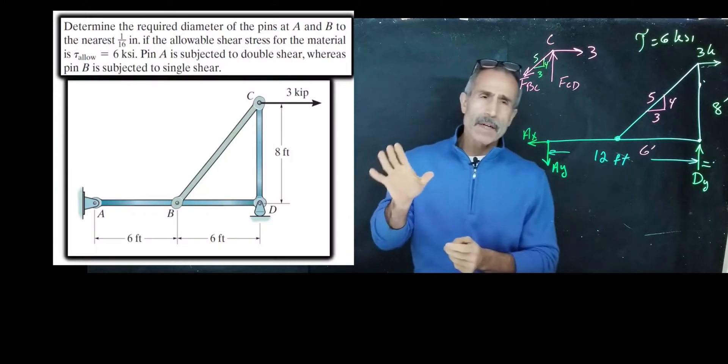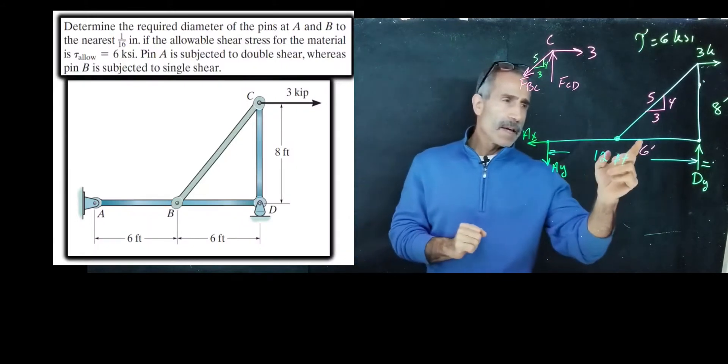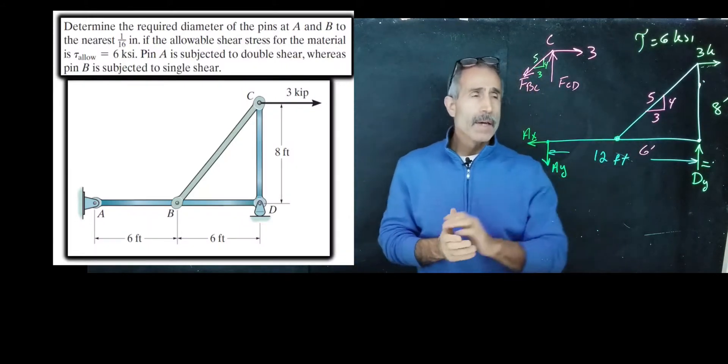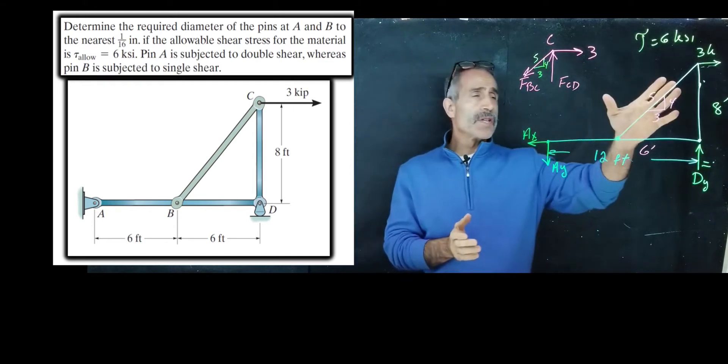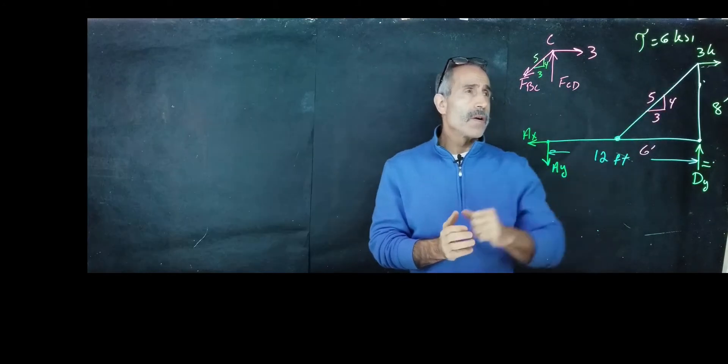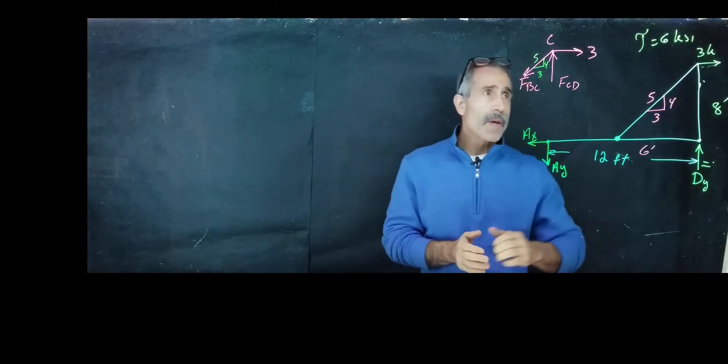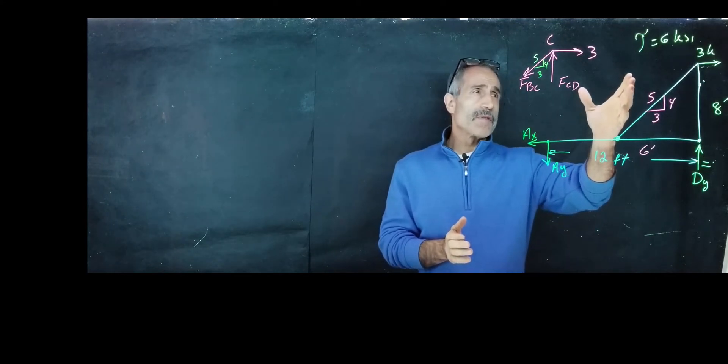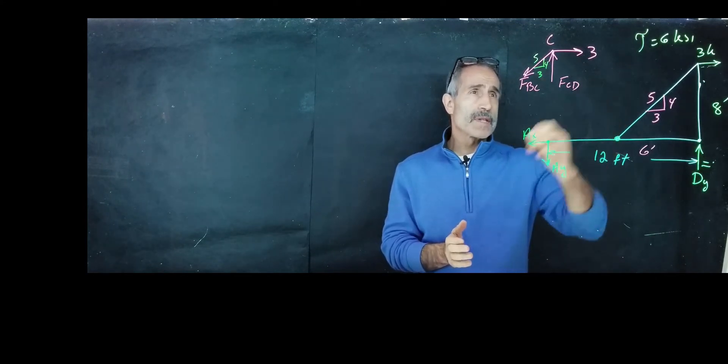The diameter of the pin at A and at B based on this 3 kip force on this thrust and also the stress. The allowable stress is given to us. The shear stress is given to us as 6 ksi.